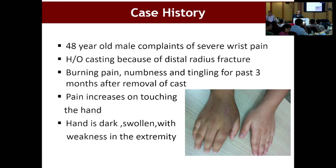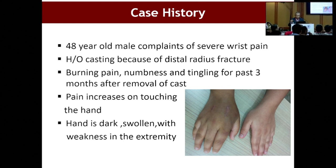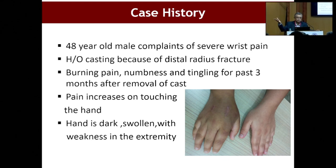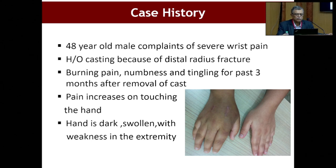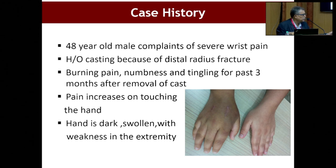In the 70s, these patients used to go to the rheumatologist because they had swollen fingers, trophic changes, not being able to move their fingers, and the GPs used to send them to the rheumatologist thinking it was rheumatoid arthritis. This is a typical patient complaining of severe wrist pain. He had a cast because of a radial fracture, and after removal of the cast the patient is complaining of burning pain, numbness, tingling, and you can see dark swollen fingers and a subtle change in the color of the hand — darkish on one side, pinkish on the other, with swollen fingers and trophic changes.